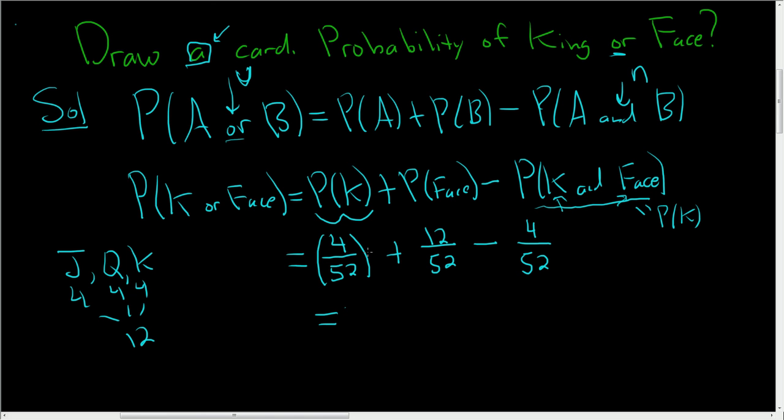So what happens here, it looks like these cancel and you just end up with 12 over 52. So 12 over 52 ends up being 0.23. So that's the probability that if you select a card at random, you will select a king or a face card.